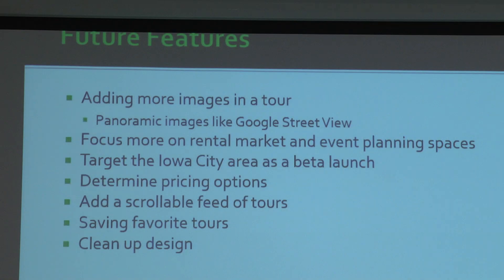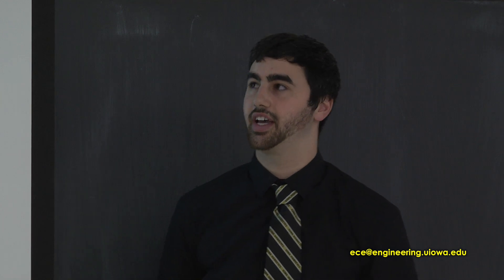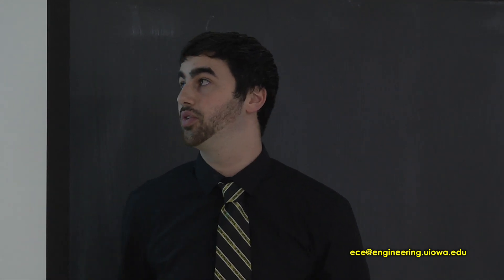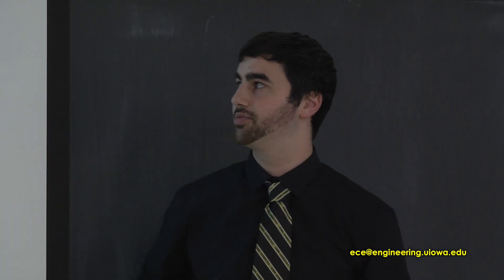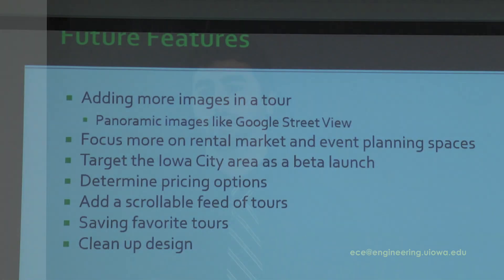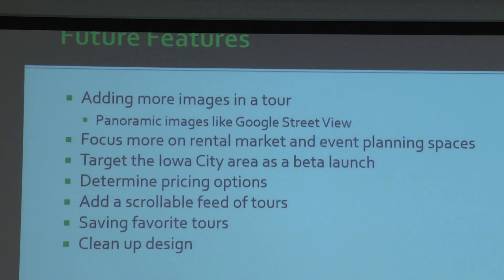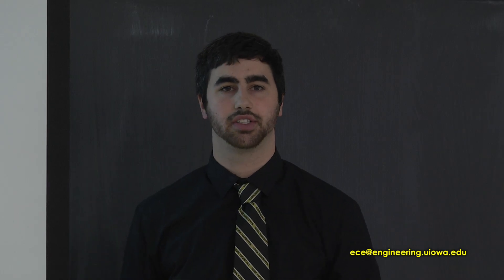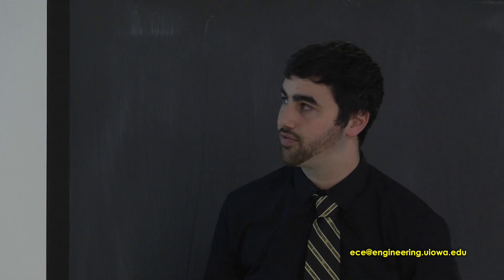Looking at future features — this is an idea we all plan on taking past senior design. Currently we only allow two viewpoints with four pictures each, but ideally we'd like the tour to become exactly like Google Street View with a 360-degree view. We had meetings with local realtors who suggested we focus more on the rental market and event planning spaces, because there's too much competition in the for-sale market.